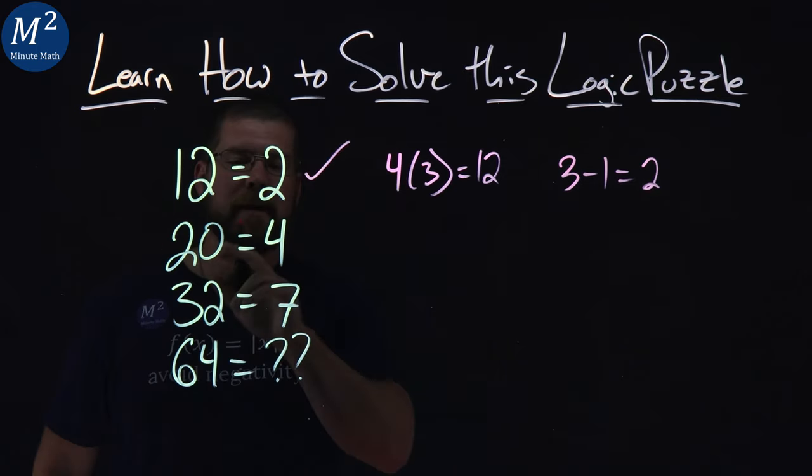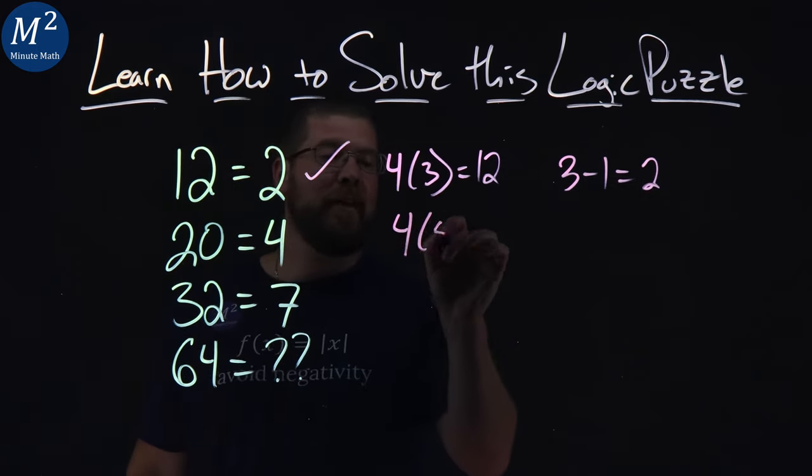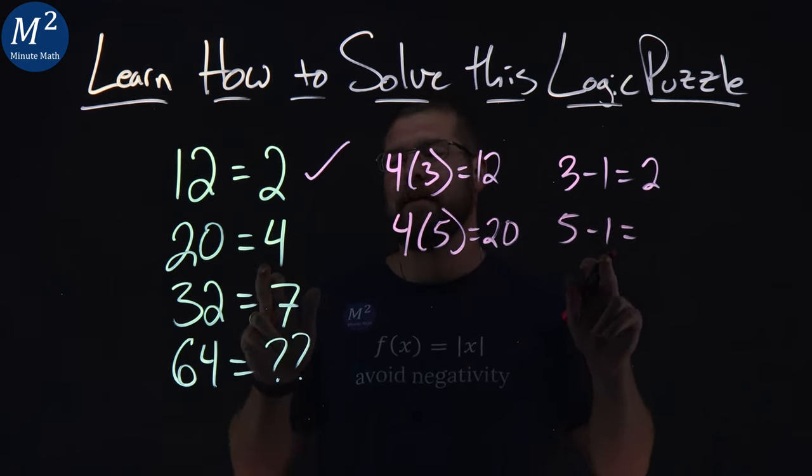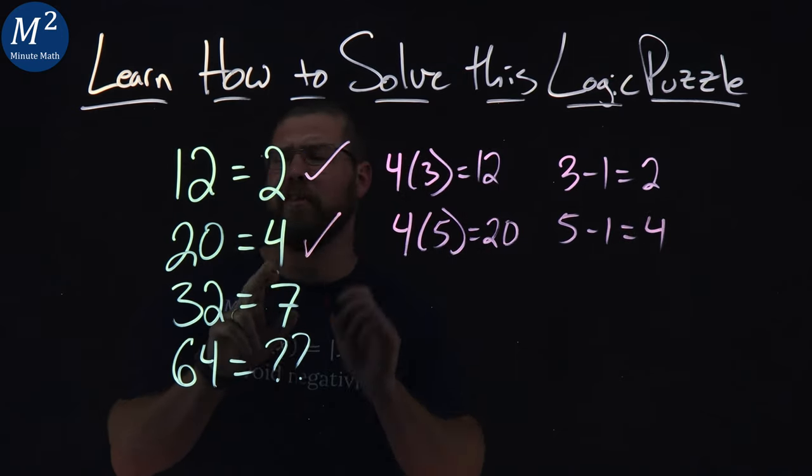Let's see if we apply that. 4 times what gives me 20? 4 times 5 gives me 20. And 5 minus 1, that's 4. Oh my goodness, is this really what it is?